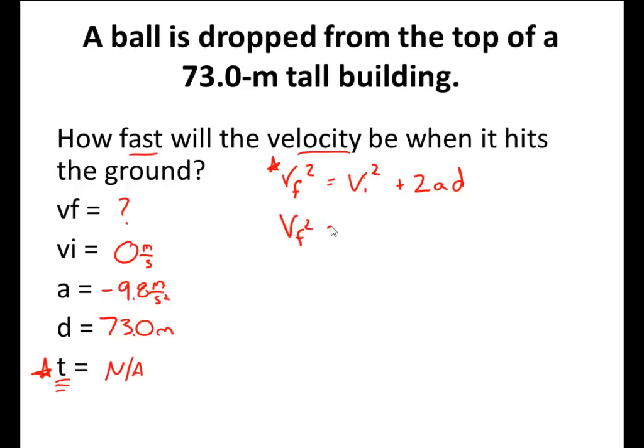So vf squared equals vi squared, and the initial velocity is right here, is 0. So that's going to be 0 meters per second, and that's going to be squared, plus 2 times negative 9.8 meters per second squared, times our displacement of 73.0 meters.